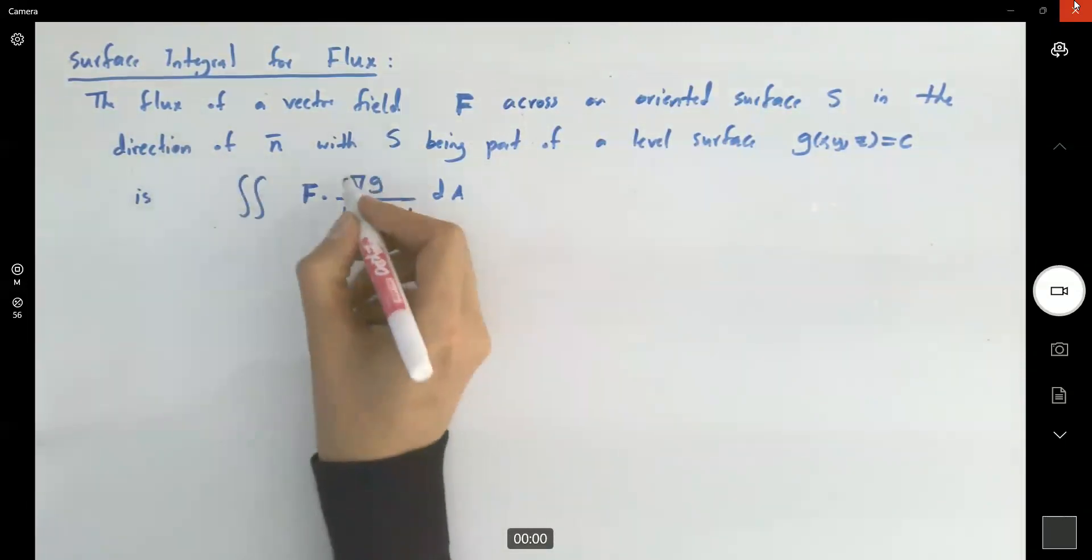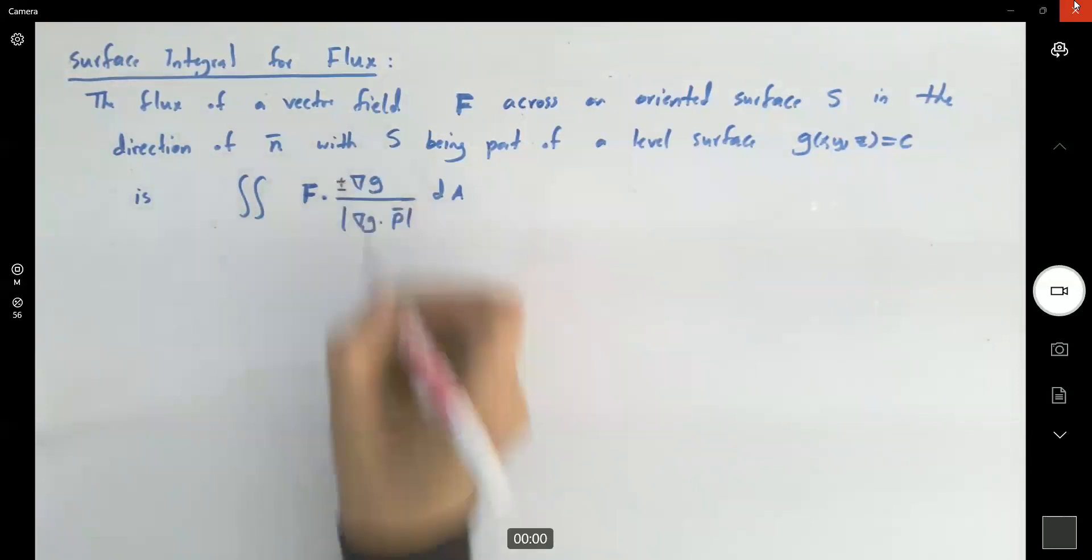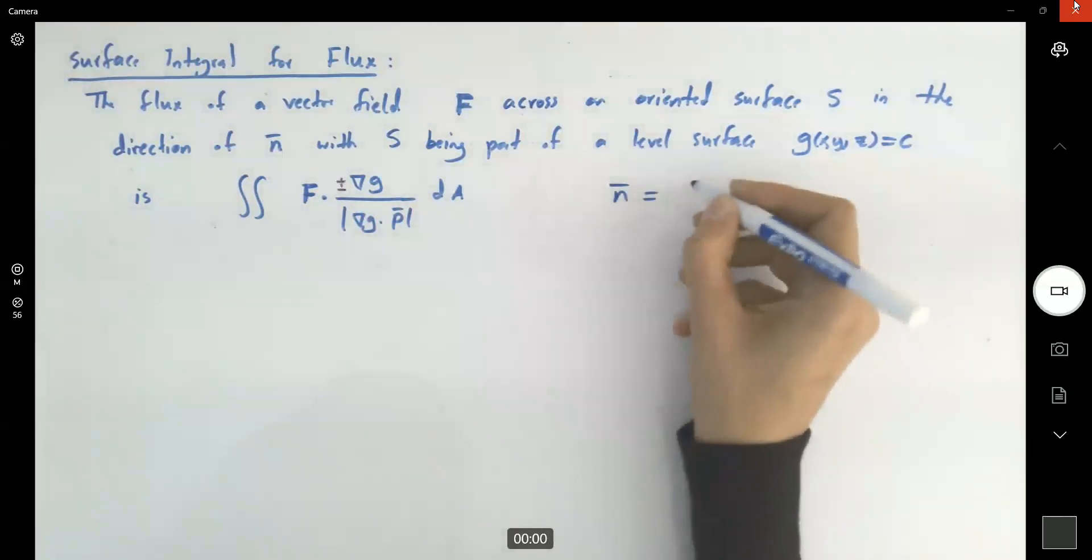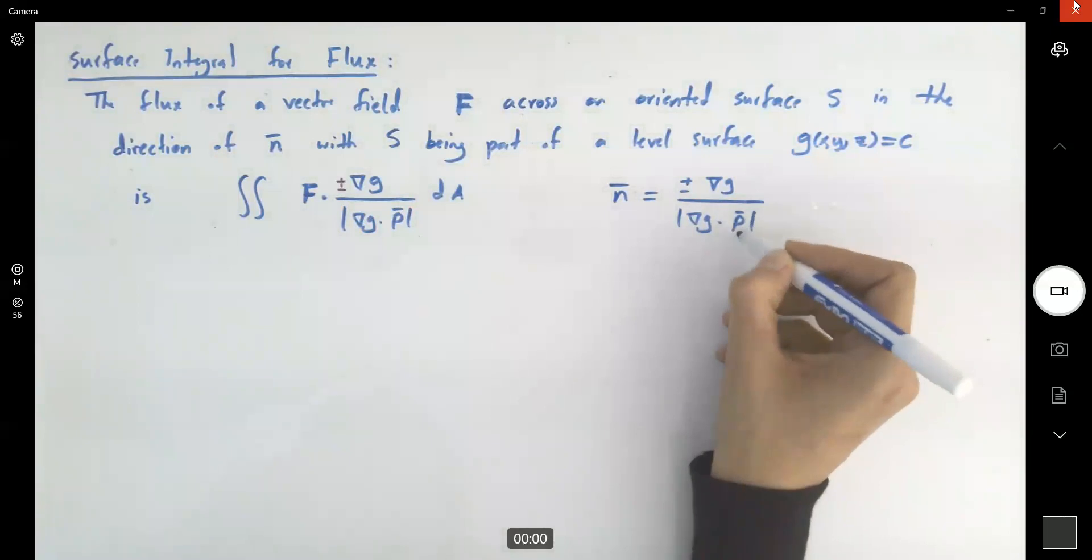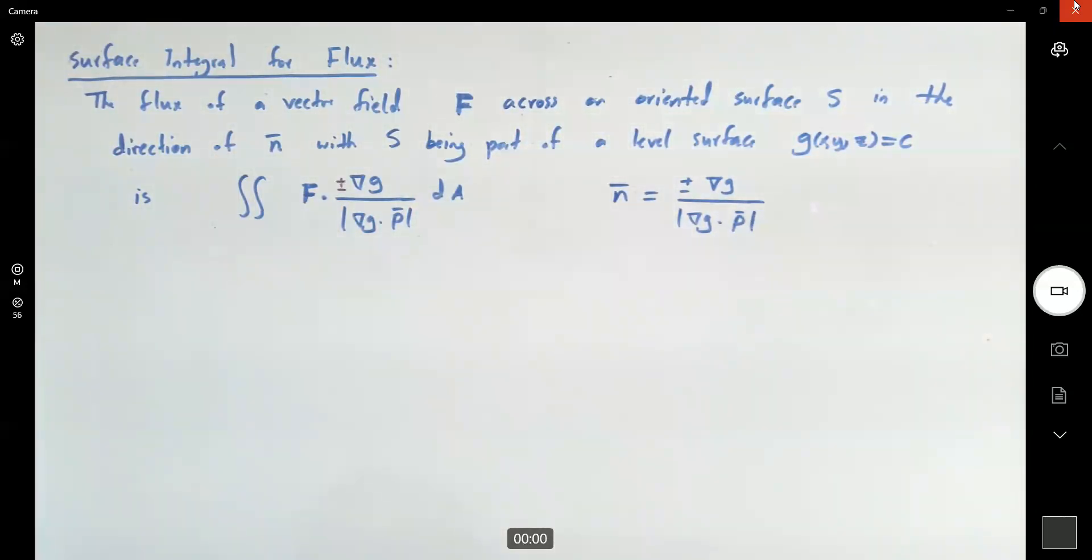Which is related to the normal vector n. This normal vector n is defined as plus minus the gradient of g divided by the magnitude of gradient of g dot the unit normal vector p to the region R.